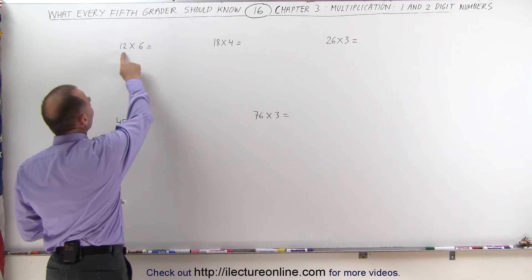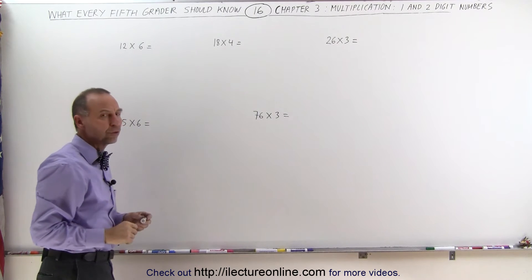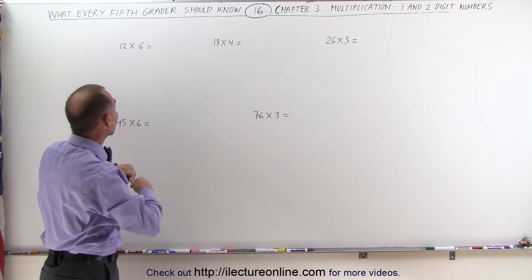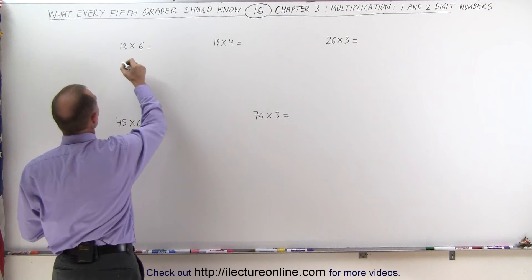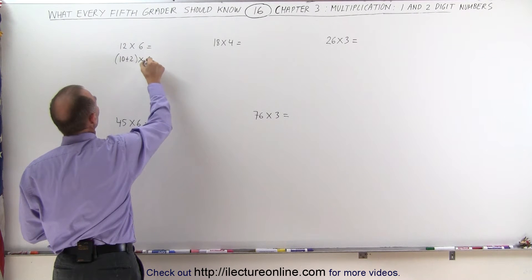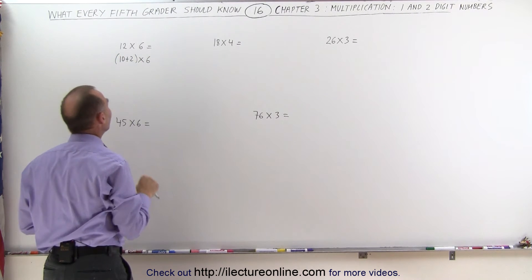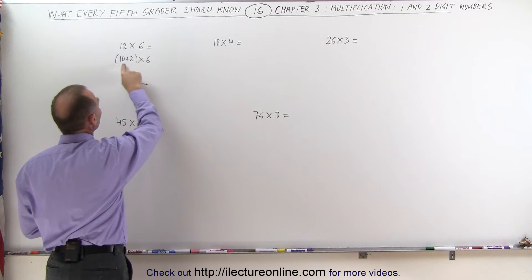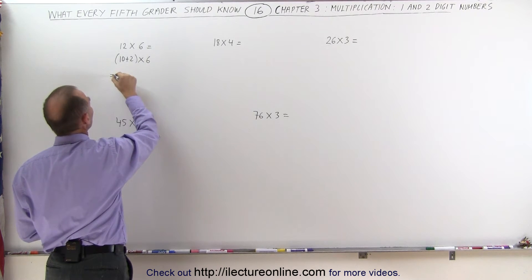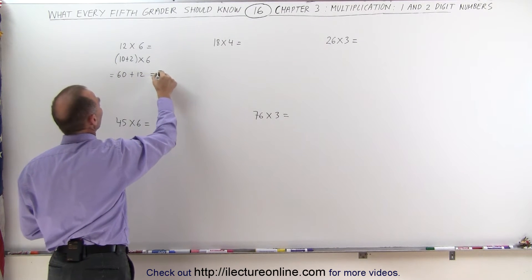Here we're multiplying 12 times 6. Notice that the unit number here — the 2 — is a very small number. So when it's like this, I recommend that you look at it like this: this is the same as saying 10 plus 2, times 6. So we break the number out between the 10 and the 2. 10 plus 2 is 12. So when we multiply 6 times 10, we get 60. And 2 times 6 is equal to 12. And 60 plus 12 is equal to 72.